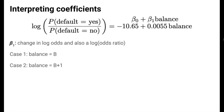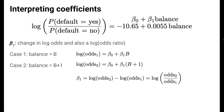Now let's consider the beta 1 coefficient. Beta 1 is interpreted as a change in log odds, or the logarithm of an odds ratio. To see why, we use our general model formula to predict the log odds of defaulting for two cases who differ in their credit card balance by 1 dollar. We see that the difference in these two predicted log odds is equal to beta 1. A difference in logs is equal to the log of the ratio, so beta 1 is interpreted as the natural logarithm of an odds ratio.